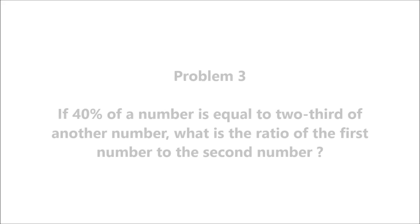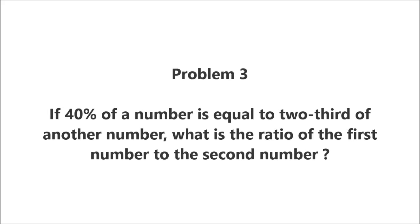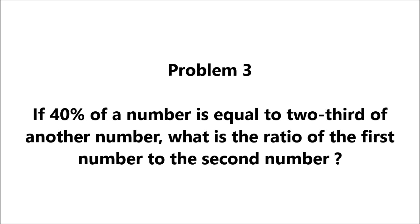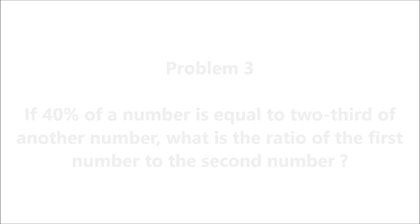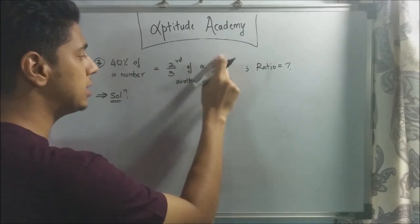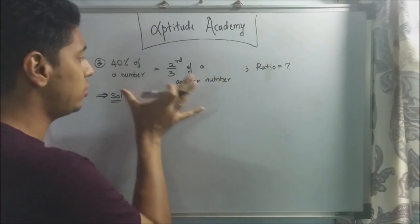Let's go on to problem number 3. Problem 3: If 40% of a number is equal to two-thirds of another number, what is the ratio of the first number to the second number?